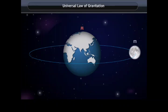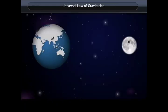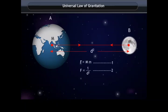Consider two objects whose masses are M and m, where M is the mass of the Earth and m is the mass of the Moon, lying at a distance d from each other. According to the universal law of gravitation, the force between two objects is directly proportional to the product of their masses and inversely proportional to the square of the distance between them.